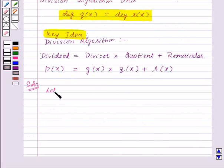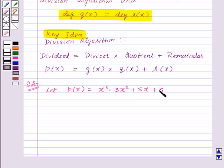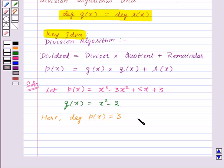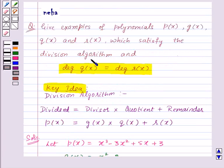Let us assume the polynomial P of X equal to X cube minus 3X square plus 5X plus 3, and the polynomial G of X equal to X square minus 2. Here, we can notice that degree of P of X is 3 and degree of G of X is equal to 2. Now, we need to find the values of Q of X and R of X by dividing P of X by G of X, and then check whether the four polynomials satisfy the division algorithm and the given condition that degree of Q of X is equal to degree of R of X.